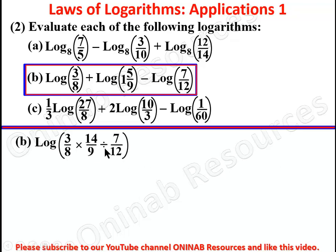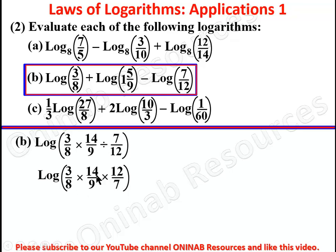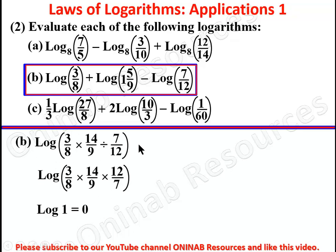Changing the division to multiplication, we have log base 10 of (3/8) times (14/9) times (12/7). Simplifying this gives log 1. Log 1 to base 10 equals 0, so that is the solution to Problem 2b.